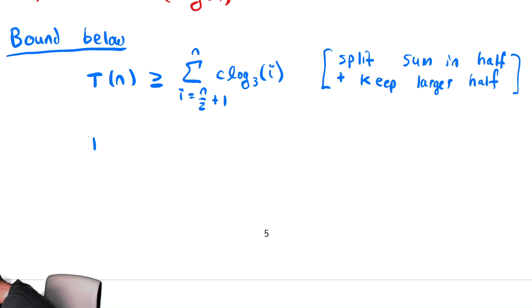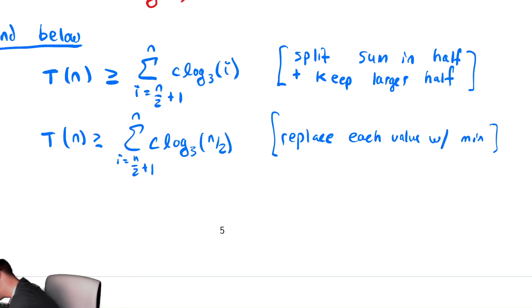We then replace each value with min. So we replace i with n over 2. And now we no longer have i inside of the summation. We take that fixed quantity and multiply by the number of terms in the summation. The number of terms in this summation is the top minus bottom plus 1, which simplifies to n over 2. So this is n divided by 2 times C log base 3 of n divided by 2.